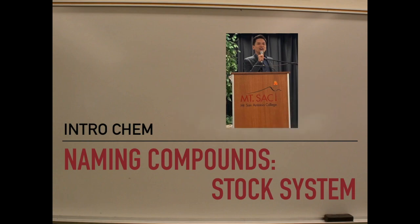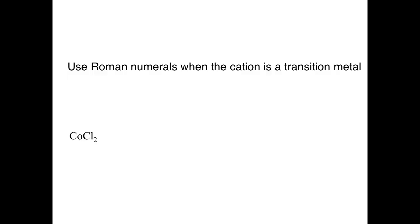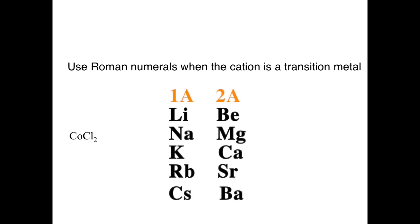If you have a transition metal as your cation, it becomes a little bit more complicated and you have to apply a different set of rules, what we call a variant-charged cation. The word variant here means that it varies. Sometimes it could be positive 1, positive 2, etc. Whereas when you are a main group element in the first category that we talked about, that's called an invariant. It doesn't change.